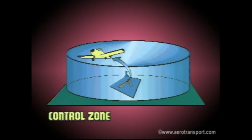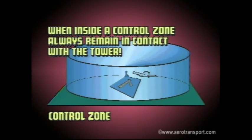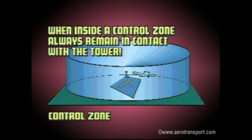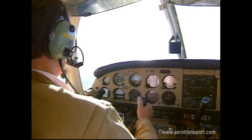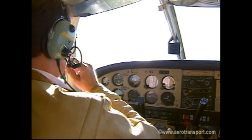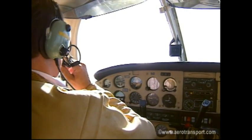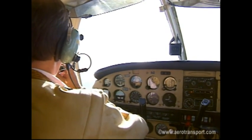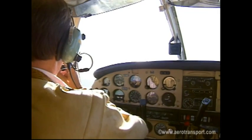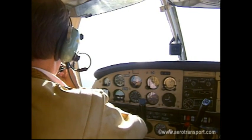After takeoff, if you fly outside of the circuit, you either remain in the control zone or leave it altogether. If you remain in the control zone, the tower will ask you to stay on the tower frequency and to advise what type of exercise you plan to do. The tower will also want to know what altitude you'll be flying at and where the exercise will be carried out.